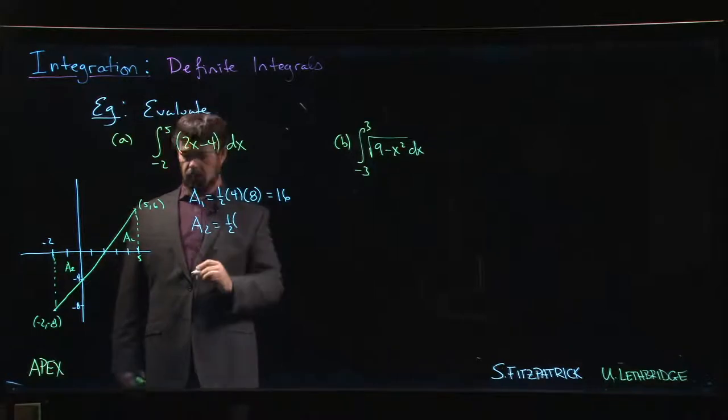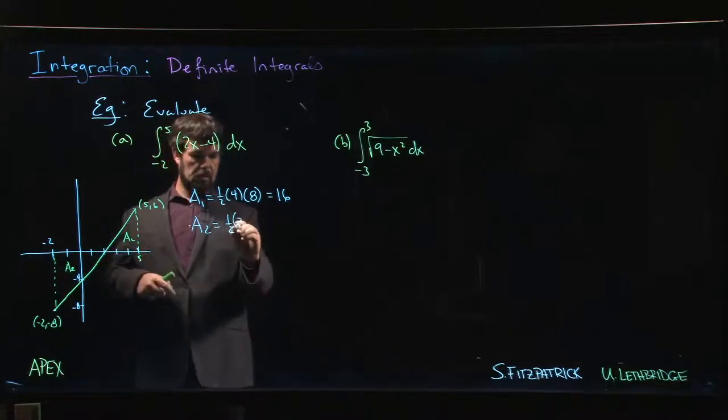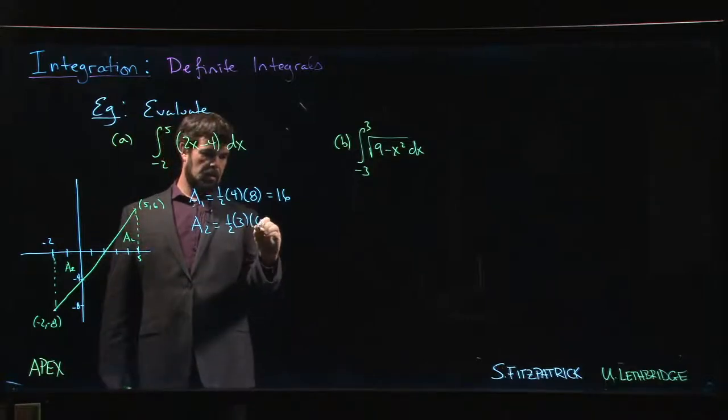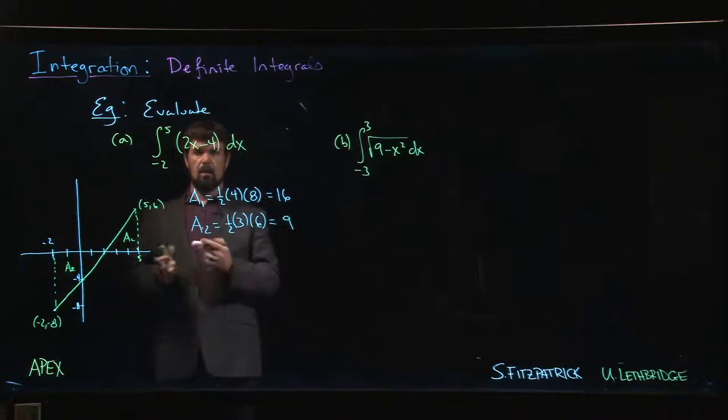Second area, 1 half. Base is 1, 2, 3, right? Distance from 2 to 5. Height is 6. So, we have 9. Okay?